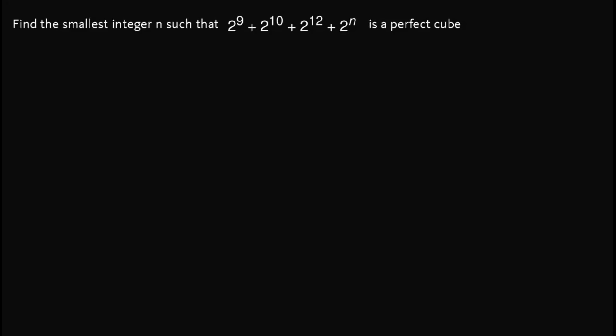Hi there. For this video, we are tasked to find the smallest integer n such that 2^9 + 2^10 + 2^12 + 2^n is a perfect cube.